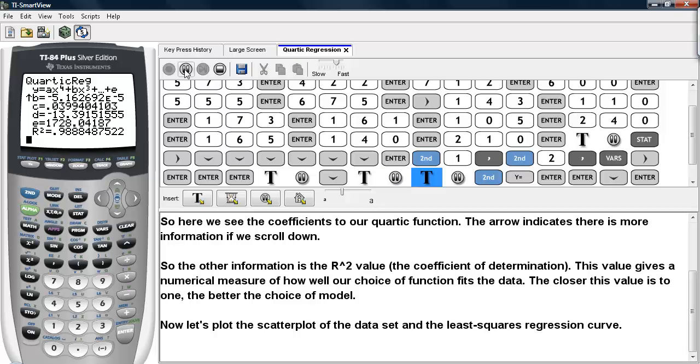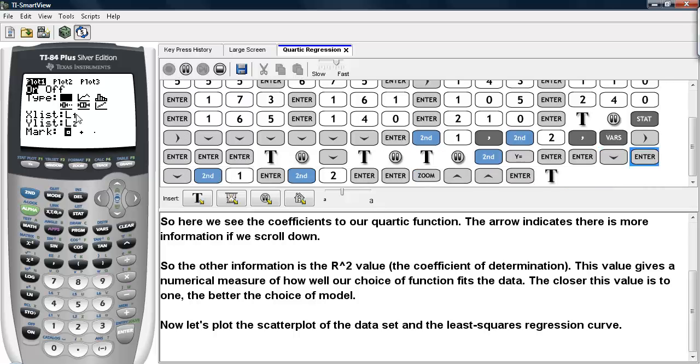Now let's plot the scatter plot for the data set and this quartic curve and get a visual comparison. So we'll go ahead and hit second and Y equals. And then we'll turn the first plot on. We'll select scatter plot, the first option here. L1 for the X list and L2 for the Y list. And we'll use the box as our marks for the data values so they are easily seen on the window.